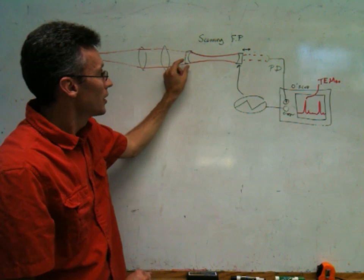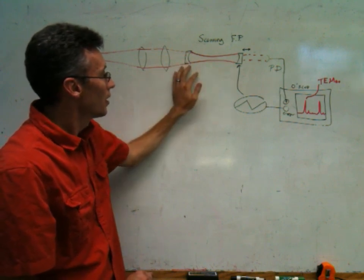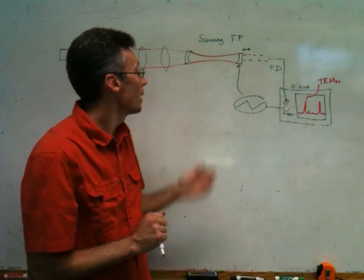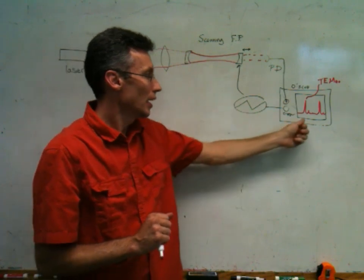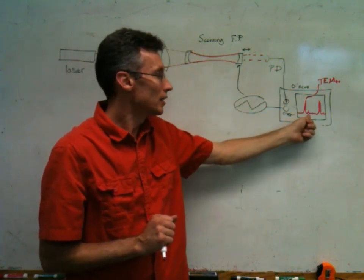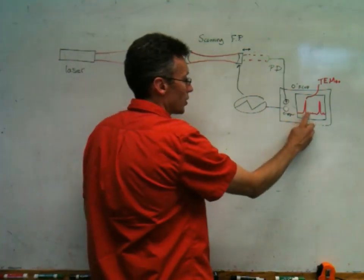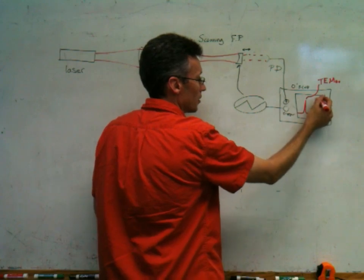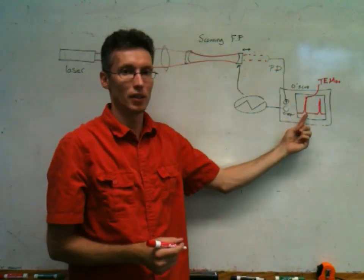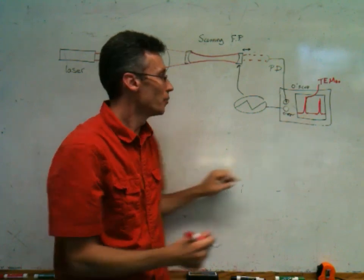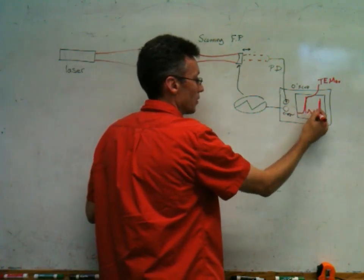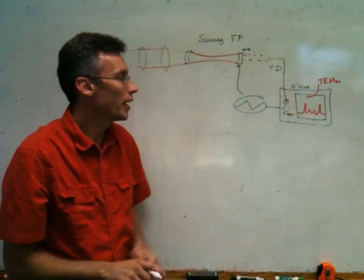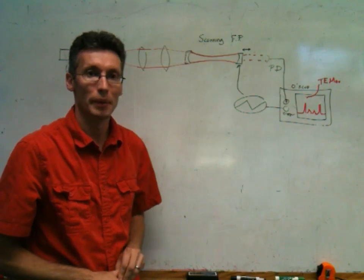As we adjust the tip and tilt of these mirrors, or the position of these lenses, we change the mode overlap between the input beam and the resonant beam, and we shift the relative amount of power in these peaks. A well-mode-matched beam is one where virtually all the power is in these single large peaks. The more power is in these smaller peaks, the worse the mode-matching. So, you can use this as a way to identify when you've achieved proper mode-matching for the cavity.